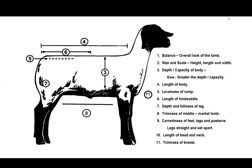Number two is size and scale — your height, length, and width should all match the look of the sheep. Number three is depth and capacity: the greater the capacity and thickness in that area, the more room to hold lambs. Number four is the overall length of the body — a nice long-bodied sheep generally has more potential for extra meat cuts on the market side.